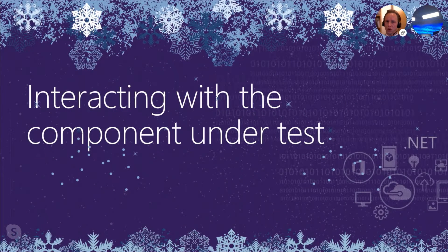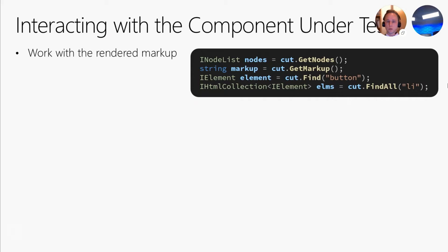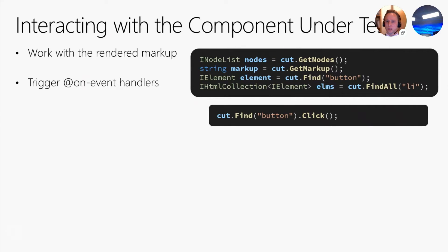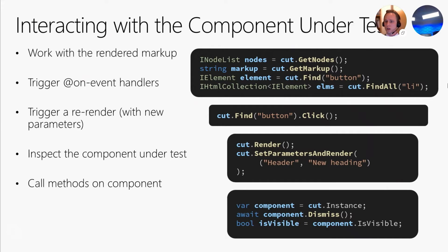Now let's talk about how we can interact with our component under test once we have it. The getNodes method returns the rendered markup as a node list. The getMarkup method returns the rendered markup as a raw string. The find and findAll methods can be used to query the DOM nodes. All event bindings available in Razor can be triggered on the DOM elements they are bound to. This example triggers the onClick event handler on a button element. We can also re-render the component, causing it to go through the component lifecycle, with or without new parameters. And we can inspect the component instance through the instance property on the rendered component.